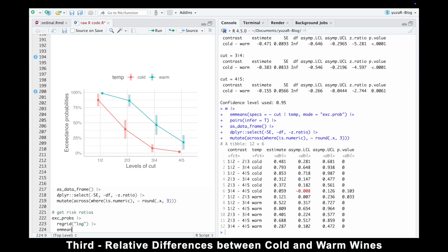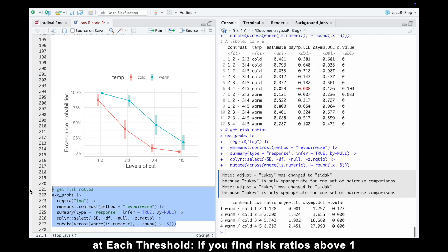Third, relative differences between cold and warm wines at each threshold. If you find risk ratios above 1 easier to interpret, you can reverse the contrast method. For instance, at the 1 to 2 threshold, warm wines are 1.128 times or 12.8% more likely than cold wines to be rated as slightly bitter or higher.